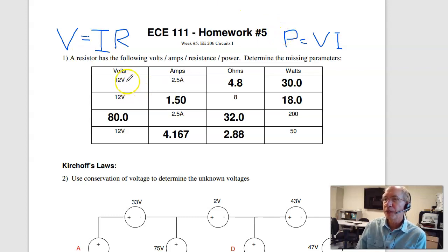So the first problem, if I have 12 volts, 2.5 amps, voltage over current gives you resistance, 4.8 ohms. Voltage times amps gives you power, 30 watts. 12 volts, 8 ohms, volts over ohms gives you current, 1.5 amps. Volts times amps is watts. 2.5 amps at 200 watts.